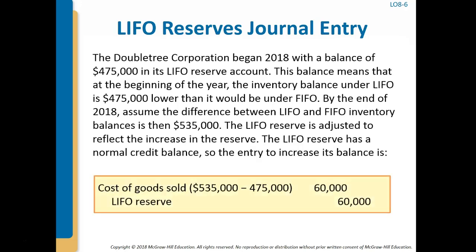The entry to increase the LIFO reserve also involves an increase to cost of goods sold. The debit to cost of goods sold increases total expenses and therefore lowers reported profitability. If the difference between inventory valued internally using FIFO and inventory valued using LIFO has decreased over the year, the LIFO reserve would need to be decreased with a debit. The corresponding credit would be to cost of goods sold. In this situation, when cost of goods sold is decreased, profits will increase. This demonstrates that even though reported inventory is lower under LIFO than FIFO, LIFO profits might be larger than FIFO profits when the LIFO reserve decreases during the year.